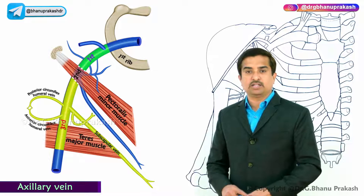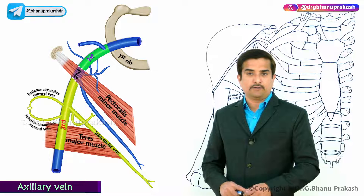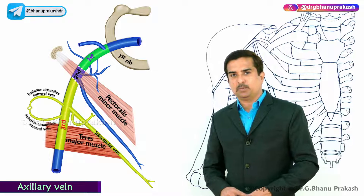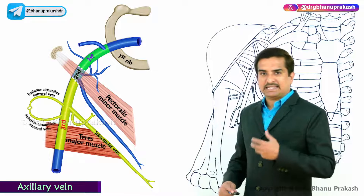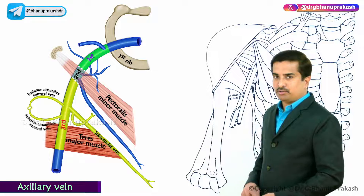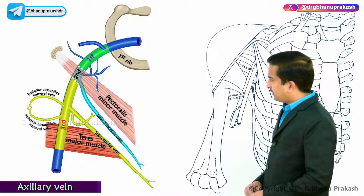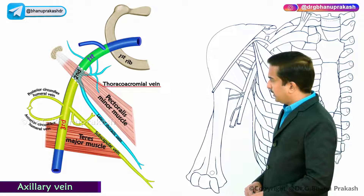The tributaries of the second part of the axillary vein are the lateral thoracic vein and the thoracoacromial vein.